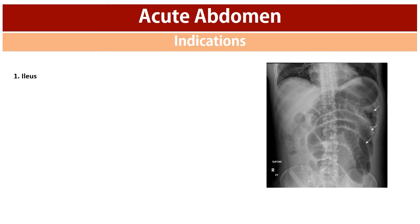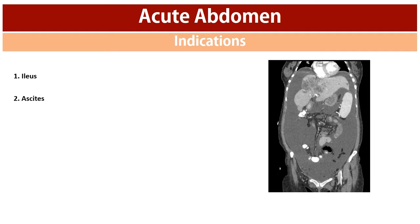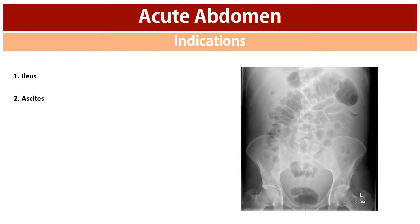The second indication is ascites, defined as an abnormal amount of intraperitoneal fluid. The best imaging modality to show ascites is CT scan, as clearly seen here in this coronal section. However, a large volume of ascites can also present on plain x-ray as poor definition of soft tissues, as noted here, or an overall increase in image density, as well as increased separation of the small bowel.